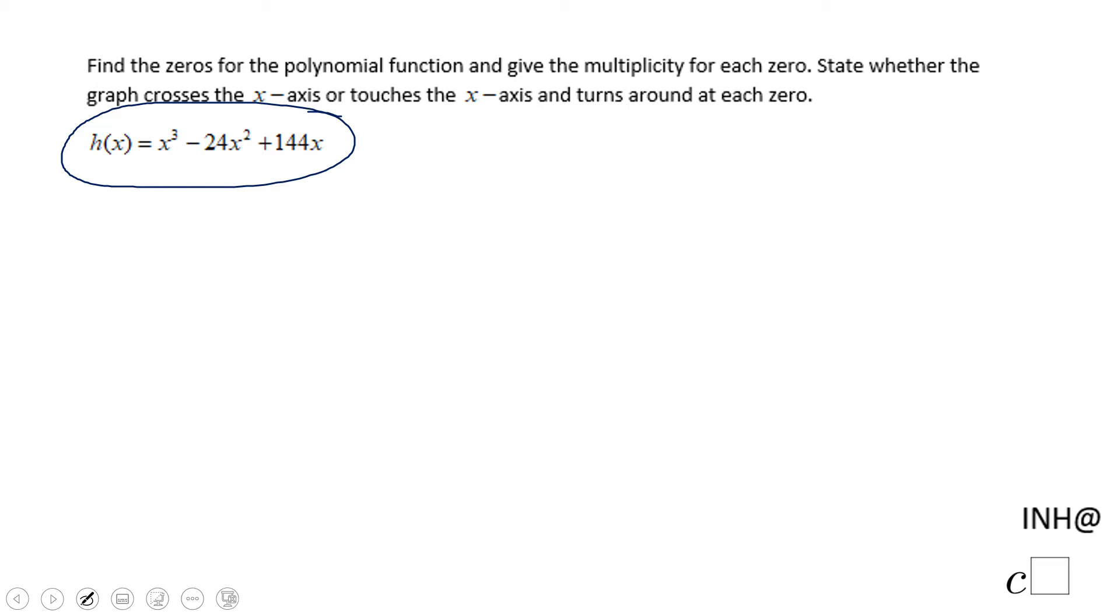That means we need to set this function equal to zero. So we have 0 = x³ - 24x² + 144x. This polynomial equation can be solved by factoring.